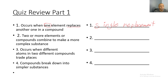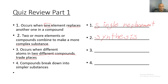Next: 'Two or more elements or compounds combine to make a more complex substance.' They were apart but combine to make a more complex substance — this is a synthesis reaction. For the third question: 'It occurs when different atoms in two different compounds trade places.' Not only is this a replacement, but it's more specifically a double replacement reaction.